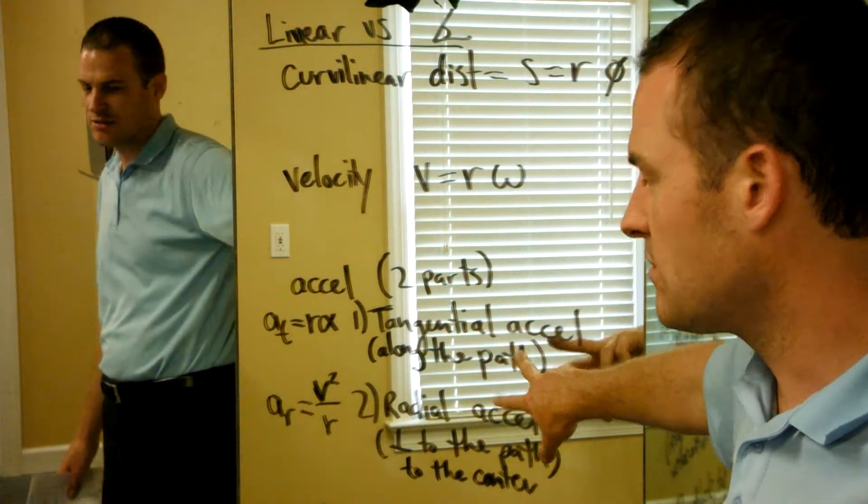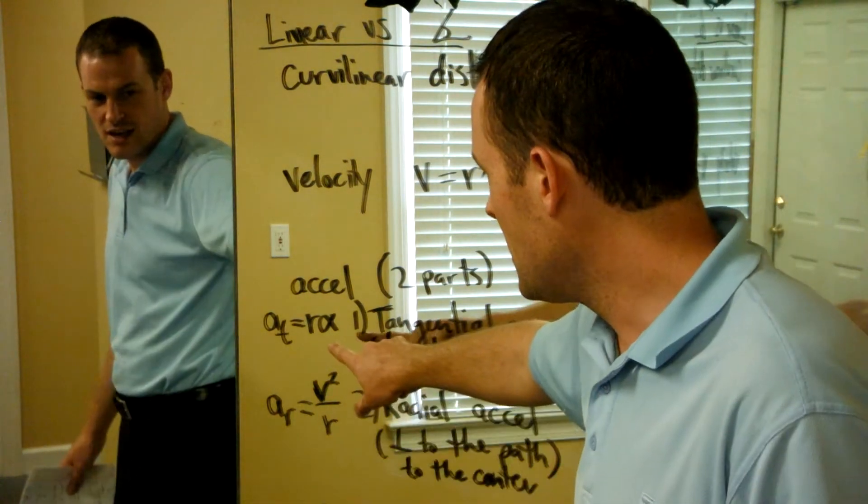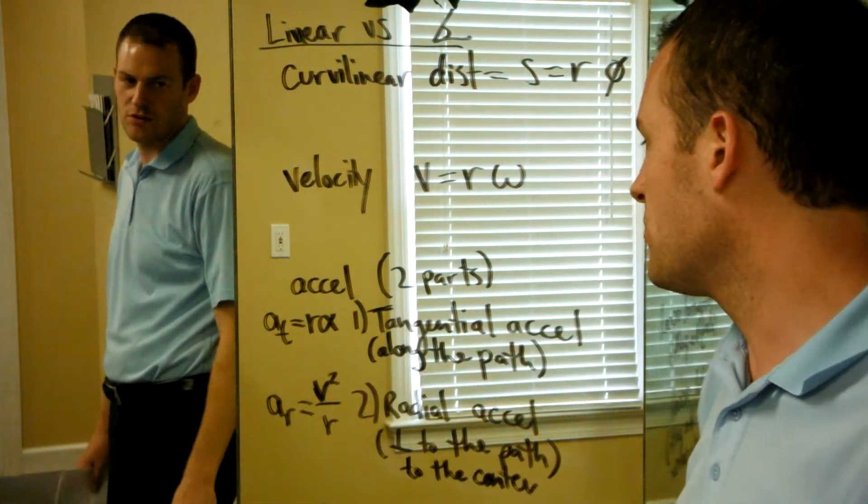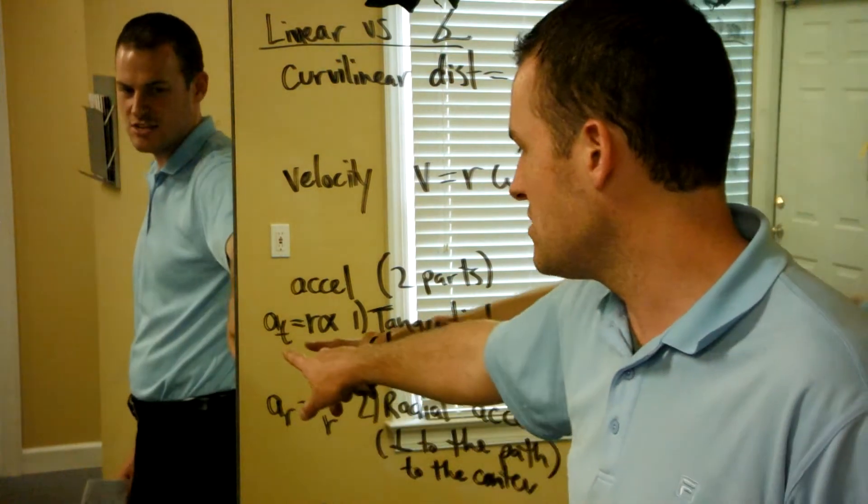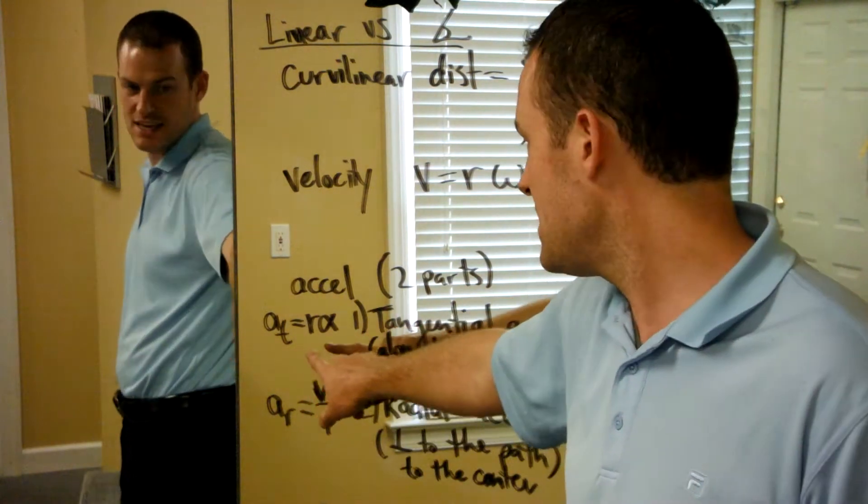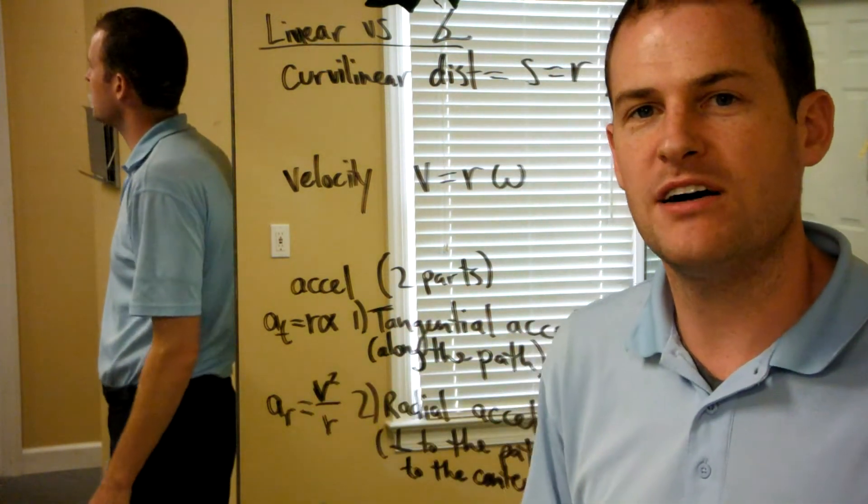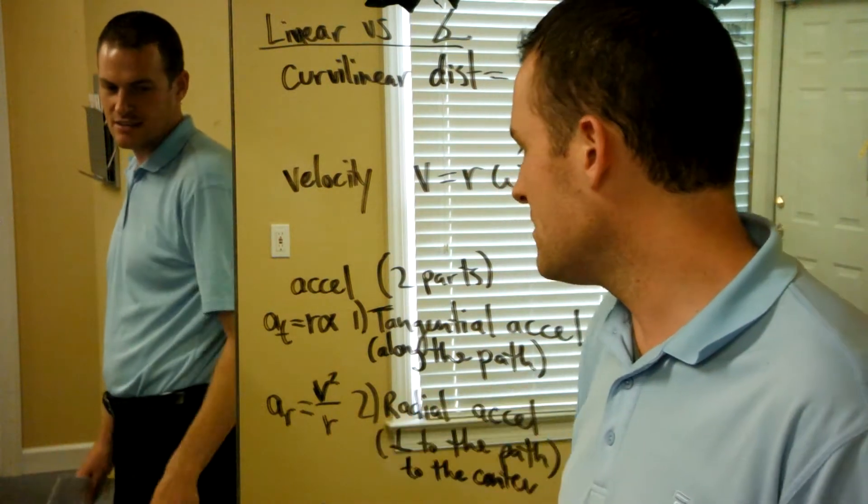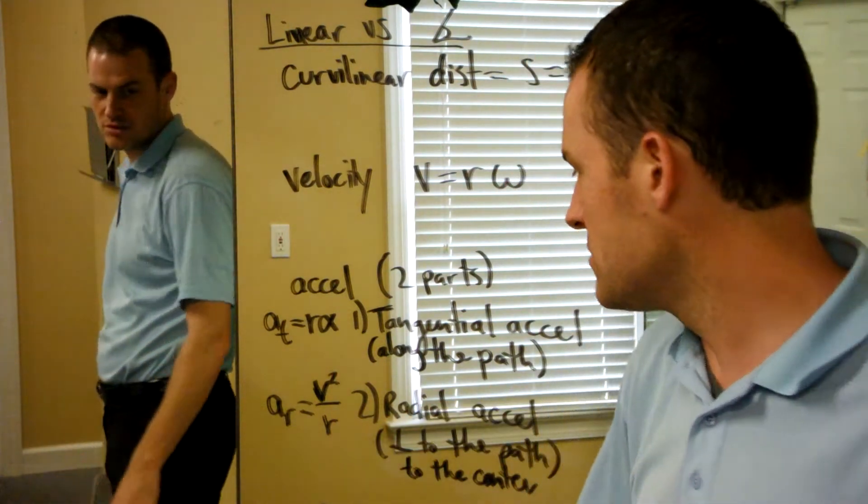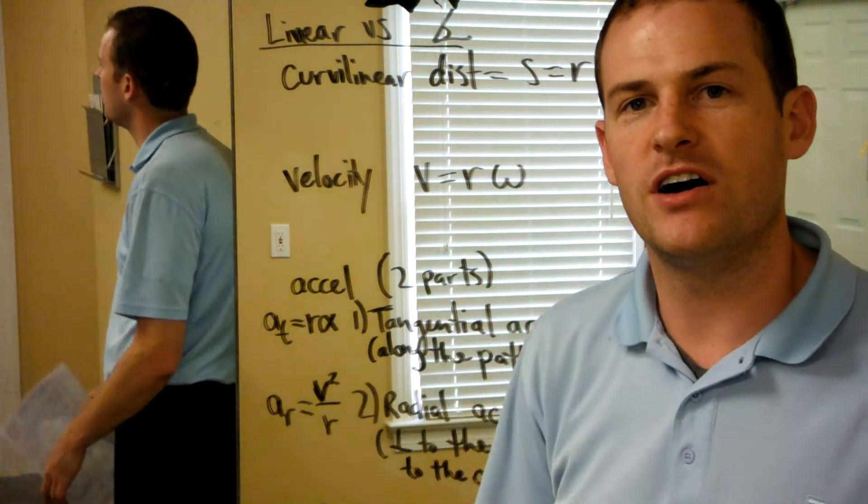Velocity we've covered. Acceleration has two pieces. The equation for acceleration is the tangential acceleration, or the aT, equals R times alpha. And the radial acceleration, the aR, equals velocity squared over R.